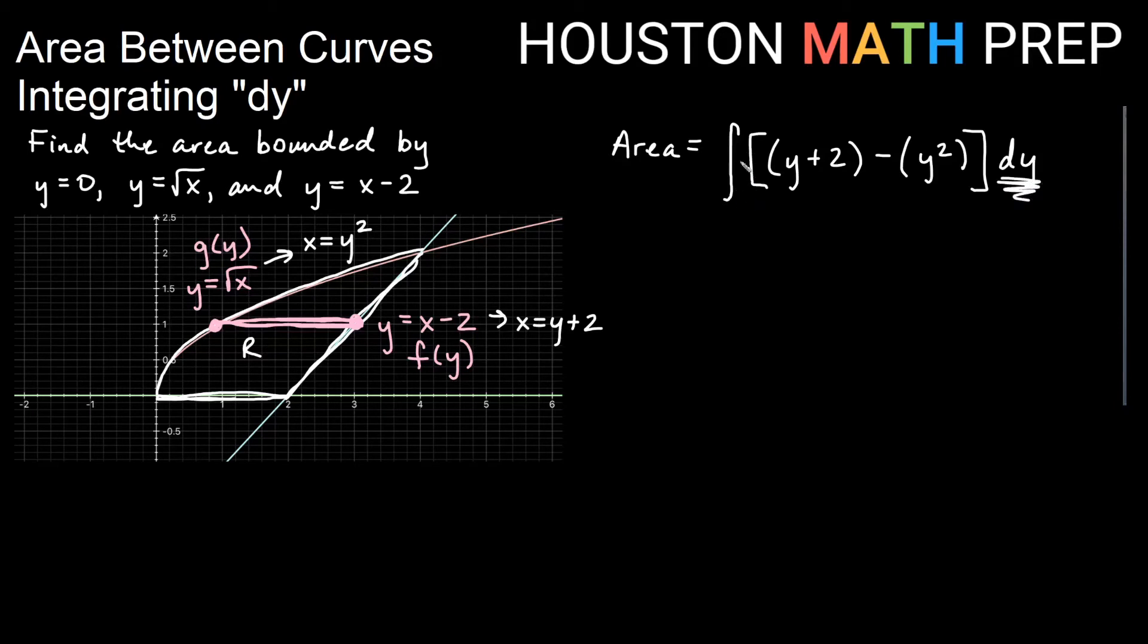Now go back and find your bounds. Remember it's dy, so they need to be y bounds. So we look at what is the lowest y value. The lowest y value happens on this line. Everywhere on this line would be where y equals 0. So that's our lower bound for y. And our upper bound is the top point, this highest point here. If you go all the way over to the axis, you'll see it's at y equals 2. So from 0 to 2, we have this integral.